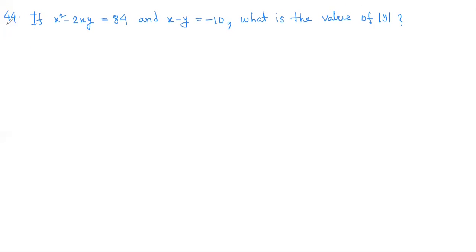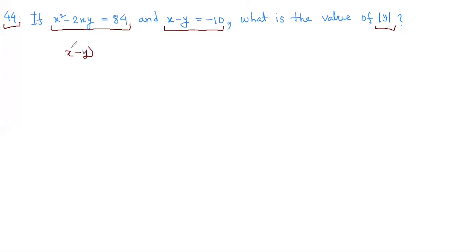In question 44, we have x squared minus 2xy equals 84 and x minus y equals minus 10. We need to find the value of modulus y. You can solve this quickly if you recognize the formula: x minus y whole squared equals x squared minus 2xy plus y squared.